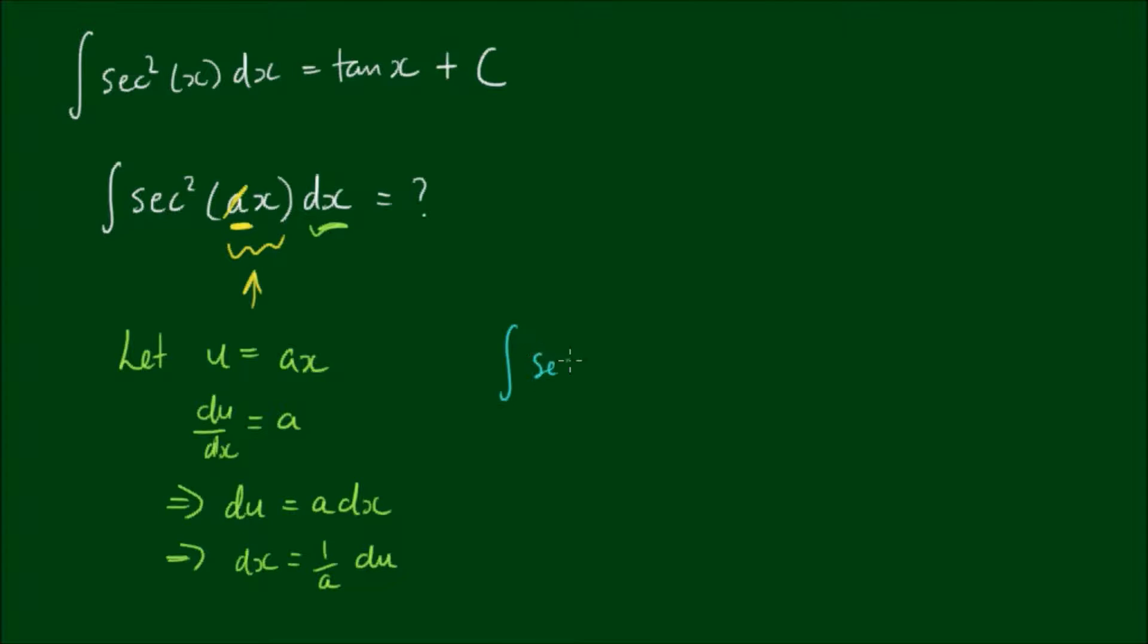So then the integral of sec squared ax dx becomes the integral of sec squared u by 1 on a du. And 1 on a, I can put out the front. So we can say that it's equal to 1 on a by the integral of sec squared u by du.